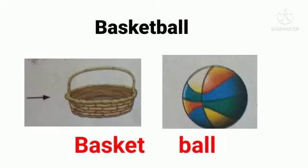Children, look at the first word: Basketball. In Basketball, there are two small words hidden. Which are the words hidden? Yes — one is Basket and another one is Ball.